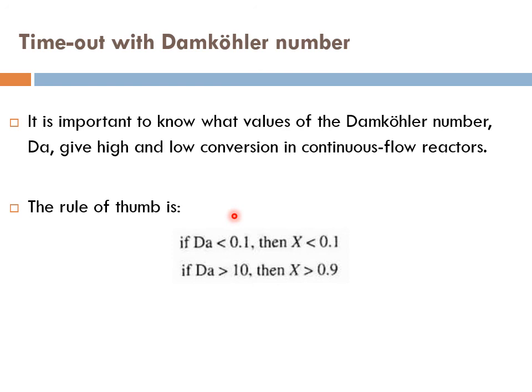The rule of thumb is: if the Damköhler number is less than 0.1, then the obtained conversion would be less than 10%. If the Damköhler number is higher than 10, then the obtained conversion would be higher than 90%.